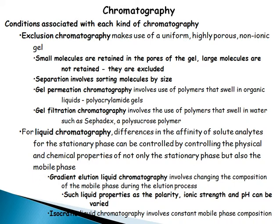For liquid chromatography, differences in the affinity of solute analytes for the stationary phase can be controlled by controlling the physical and chemical properties of not only the stationary phase but also the mobile phase. Gradient elution involves changing the composition of the mobile phase during elution; properties such as polarity, ionic strength, and pH can be varied.